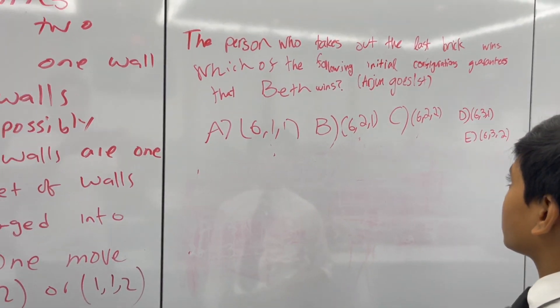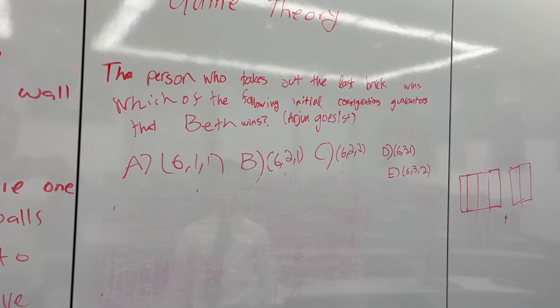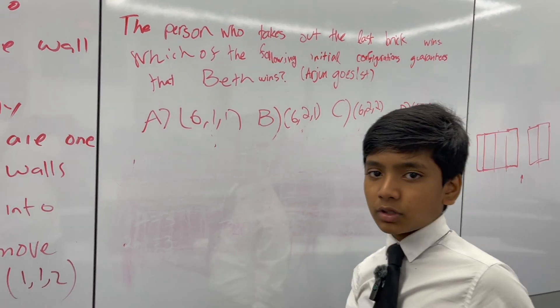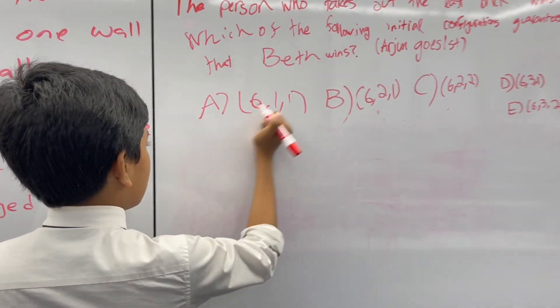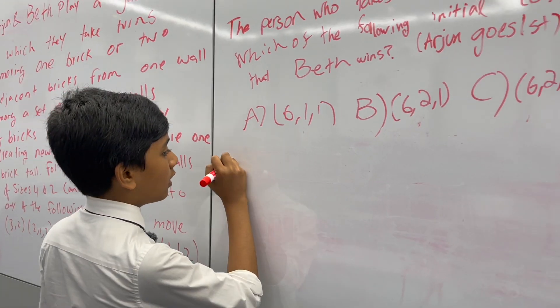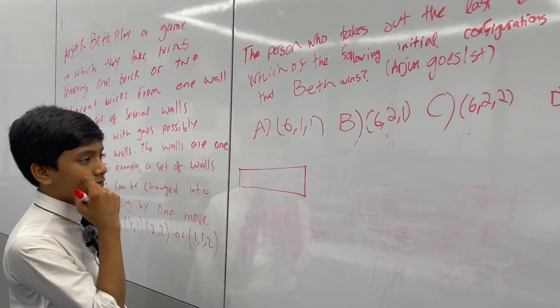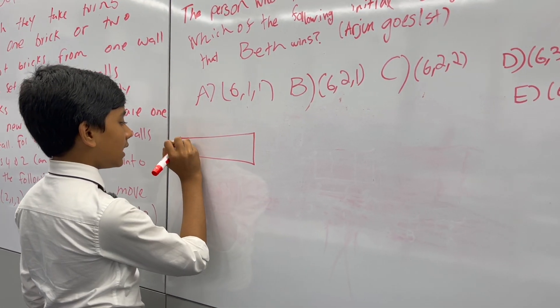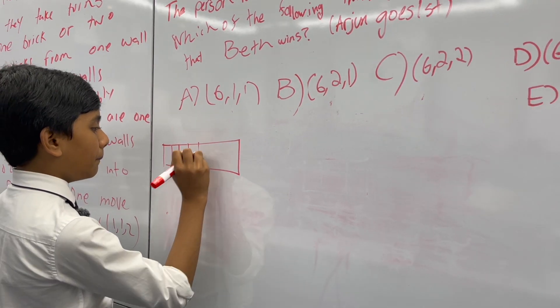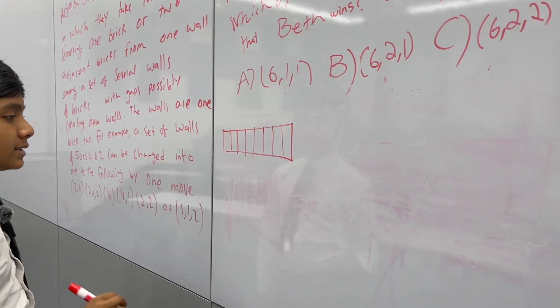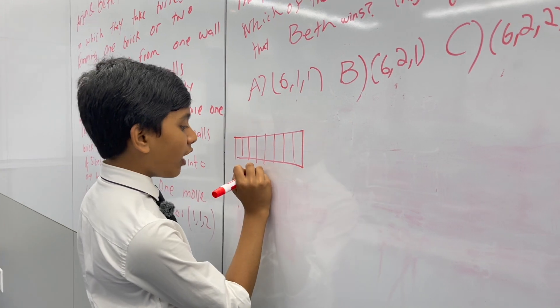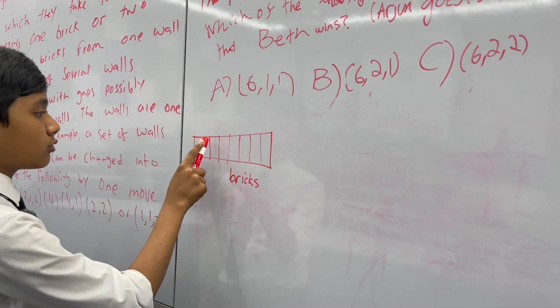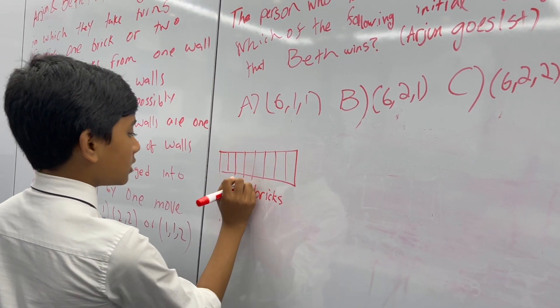The person who takes out the last brick wins. Which of the following initial configurations guarantees Beth a win? Now, let's do something similar but not the same. Because in game theory, or in problem solving in general, a great thing is to first work with a smaller example. Let's say Beth and Arjun are taking bricks out of a line of finite X bricks. In this case, we don't have X bricks. We have 1, 2, 3, 4, 5, 6, 7, 8 bricks.